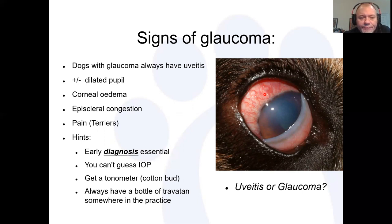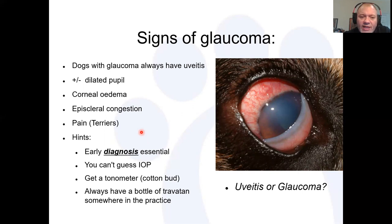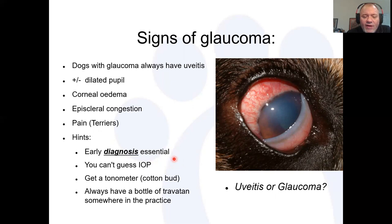Glaucoma is often a painful disease, but dogs and cats can seem to cope well with it. Gentle palpation of a glaucomatous globe will often give a readily aversive response. One of our biggest challenges is terrier breeds, which are very stoic by nature. In chronic lens luxation cases it's not uncommon for dogs to appear very happy despite very high pressures, yet when we enucleate or treat successfully we see a dramatic improvement in behavior.